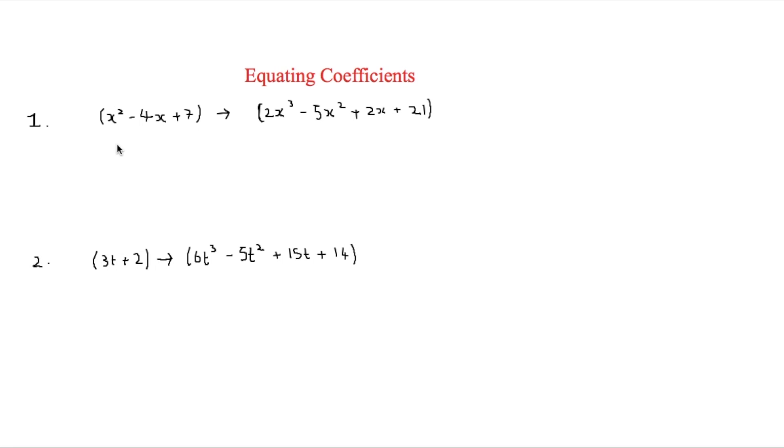Now the first question is x squared minus 4x plus 7 goes to 2x cubed minus 5x squared plus 2x plus 21. And what we have to work out here is what factor can we put in to make the first part the second part.